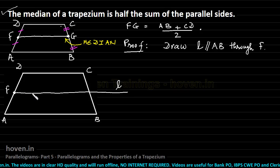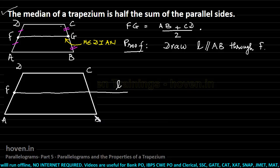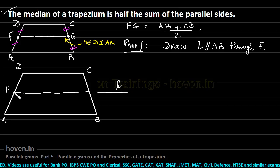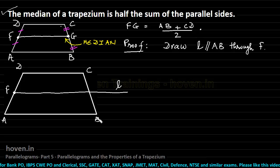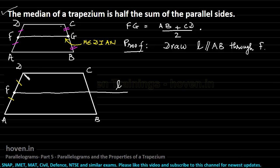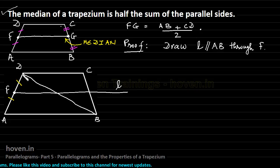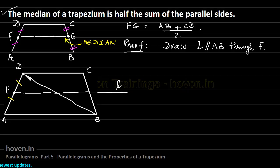We have said nothing about at what point this line intersects side BC. The simplest starting point is to draw a line parallel to AB through point F. We have done nothing which is not possible — we have started with this midpoint, drawn a line parallel to AB from F, and then completed the diagonal BD.